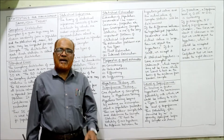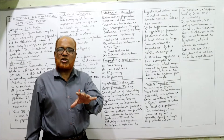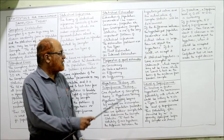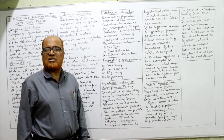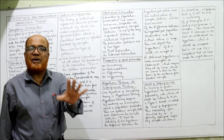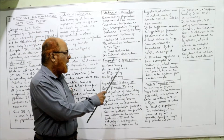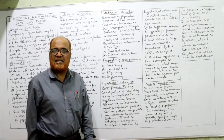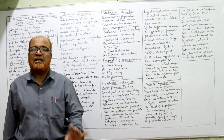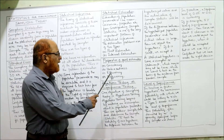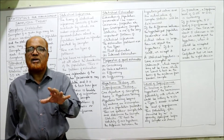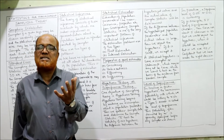Properties of a good estimator: when we make an estimation there should be certain properties. The estimator should be consistent; there should be unbiasedness — no bias in calculating the estimator; and thirdly, efficiency and sufficiency. These are the properties of a good estimator.